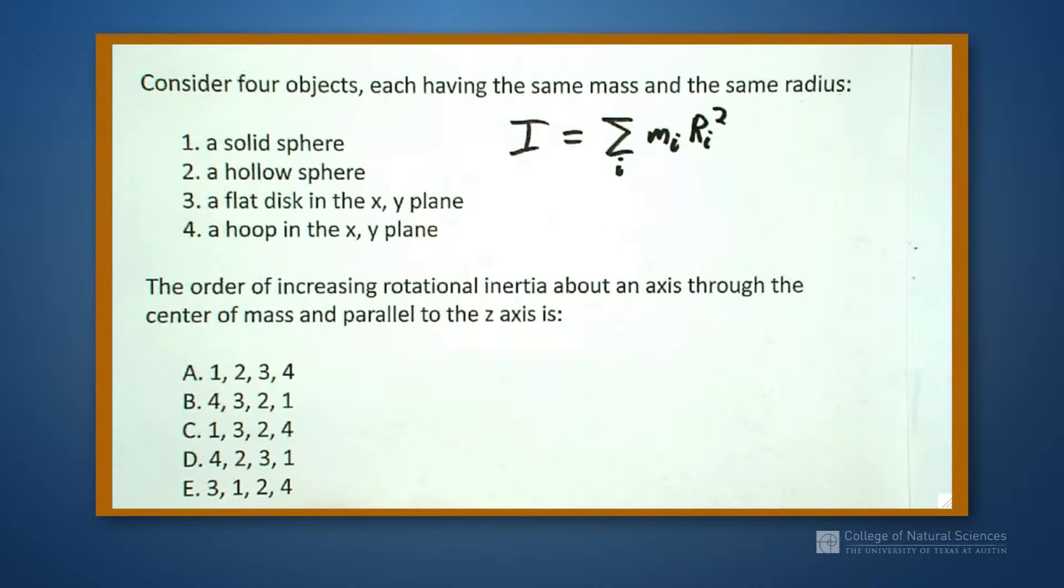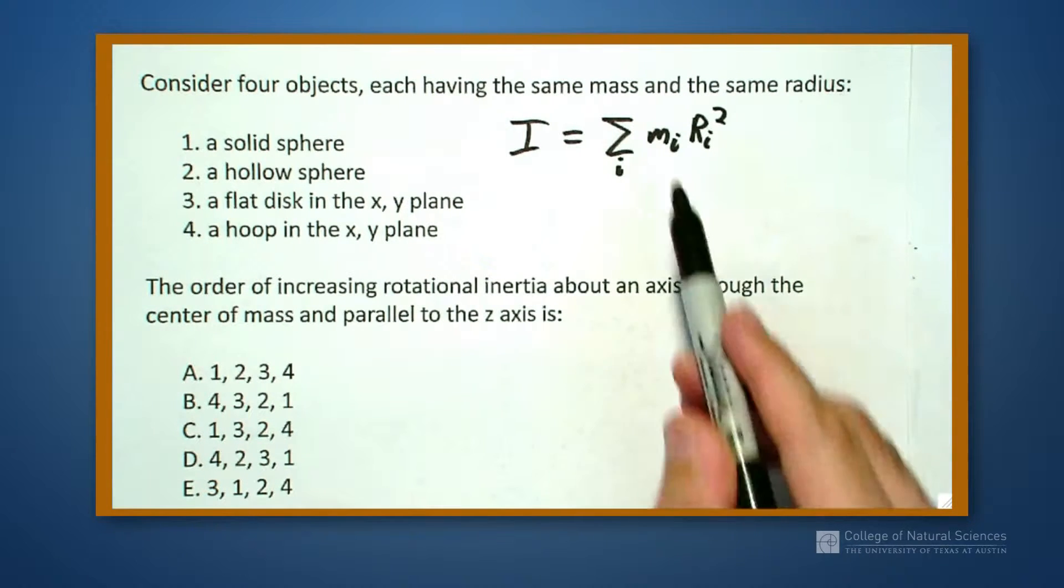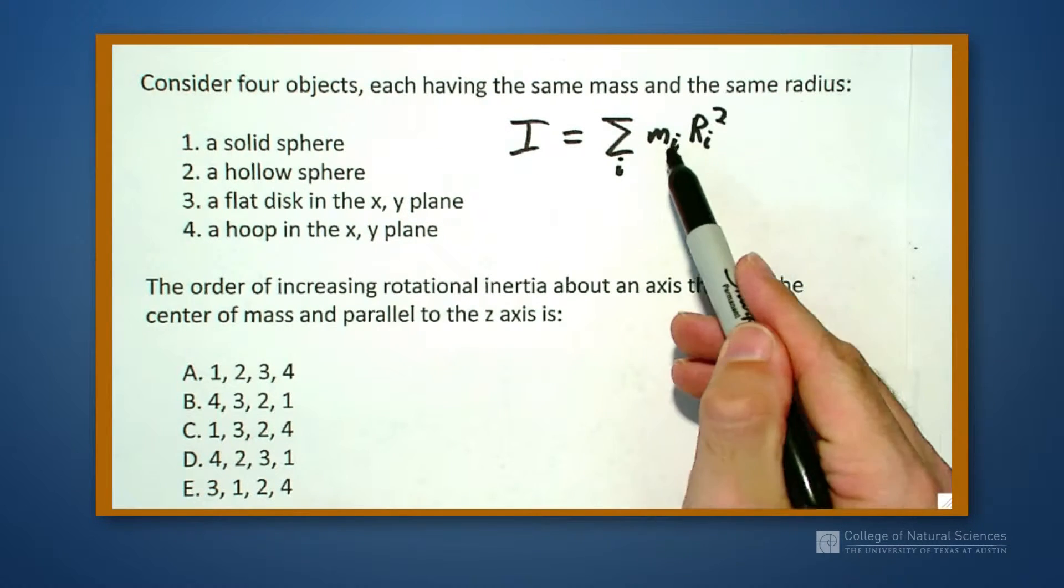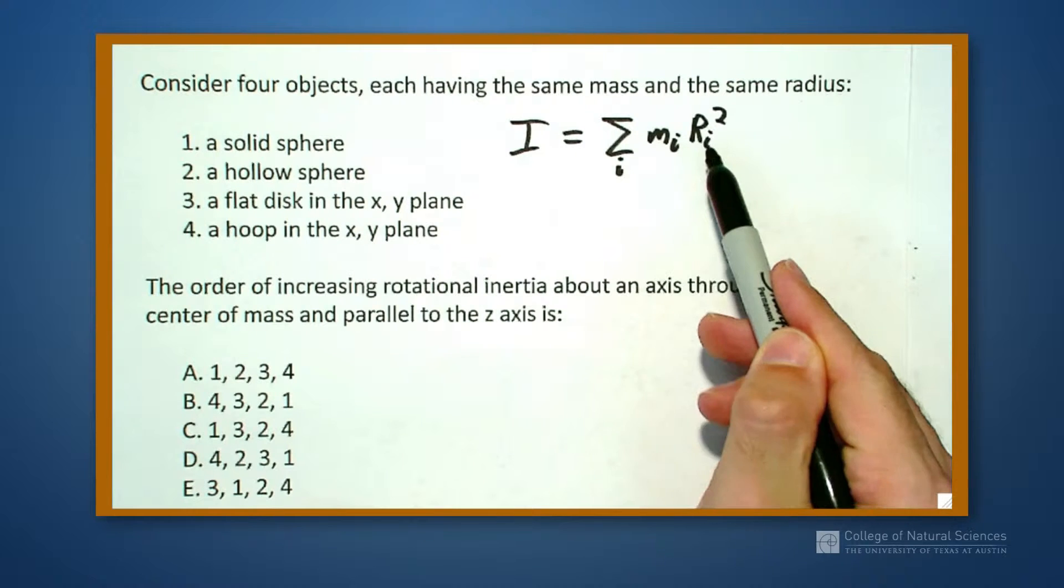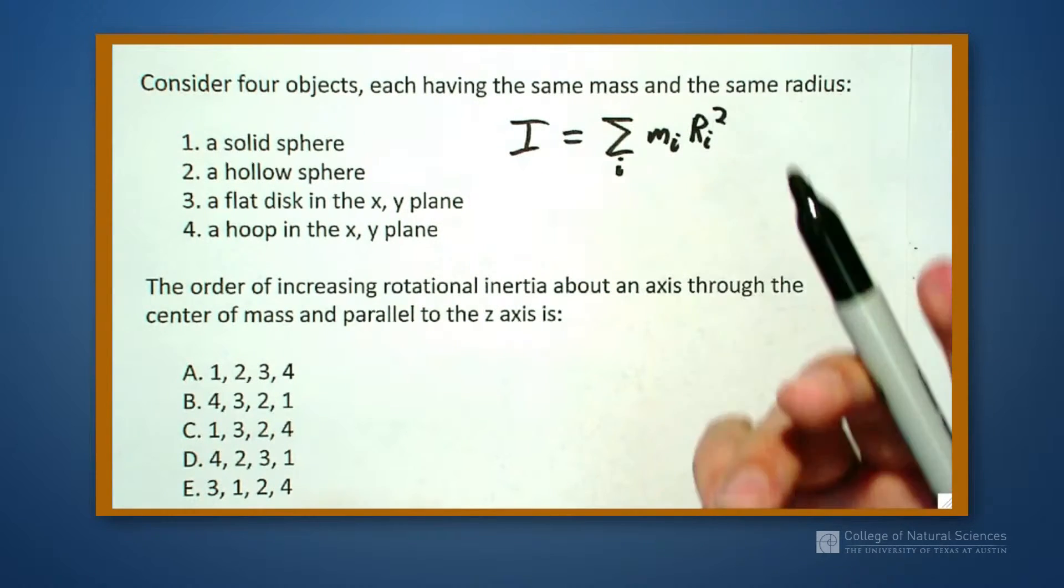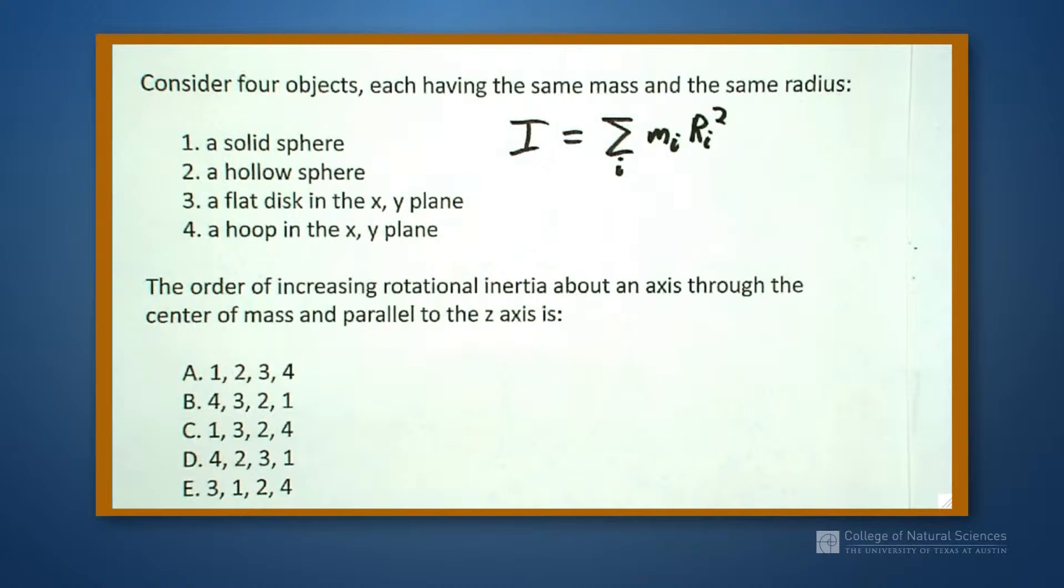This says for each mass we look at its radius, that that mass is away, squared. The heavier that mass is or the further it's away will increase the moment of inertia. So things that are compact,